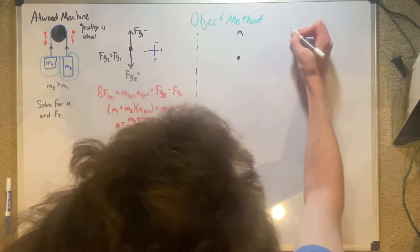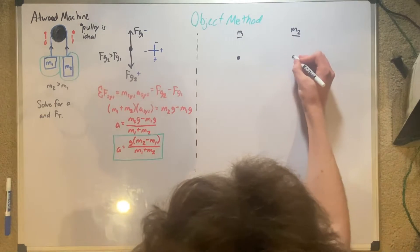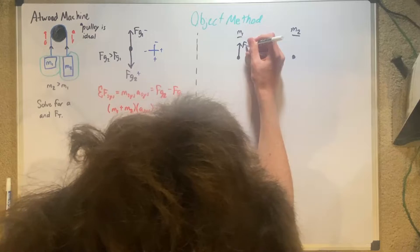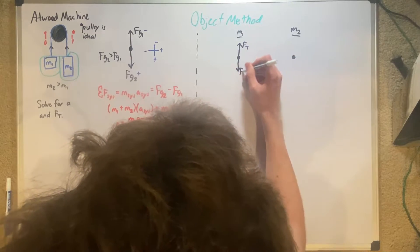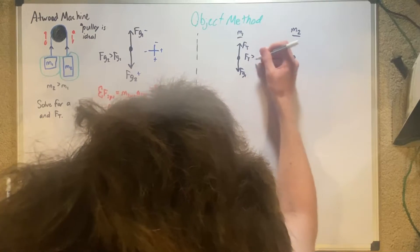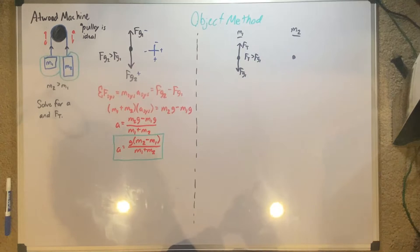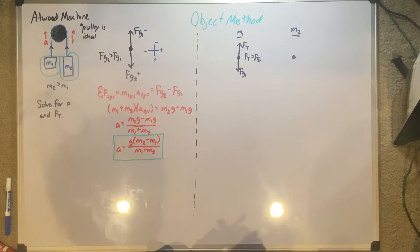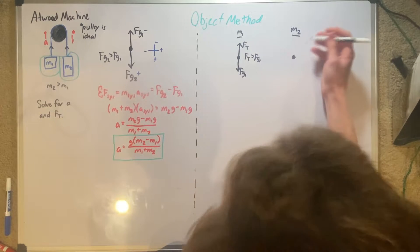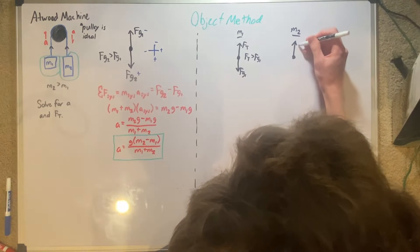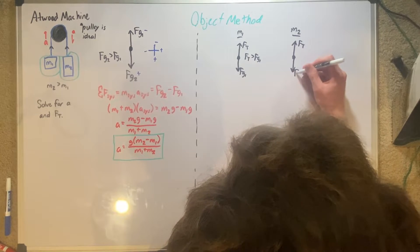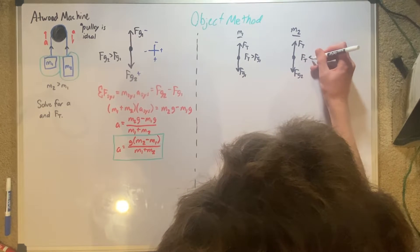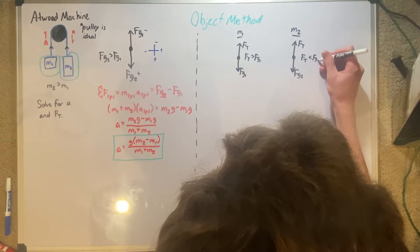We have M1 and M2. For M1, the forces acting on it are the force of tension and force of gravity 1, where force of tension is greater than force of gravity 1 because it's accelerating upwards. For M2, we have the force of tension that also goes upwards, and then force of gravity 2, where force of tension is less than force of gravity 2.